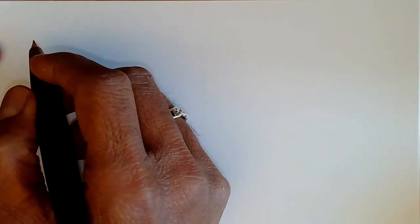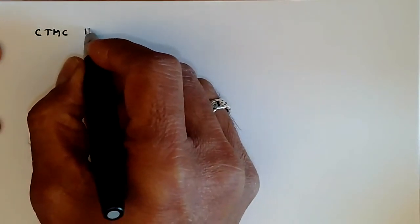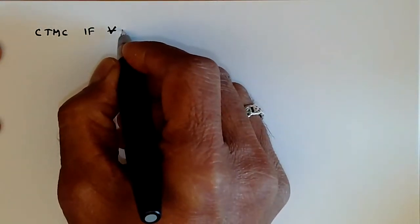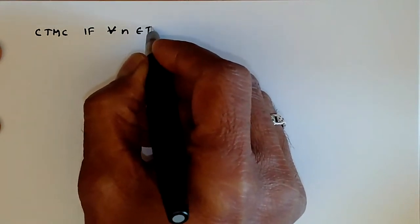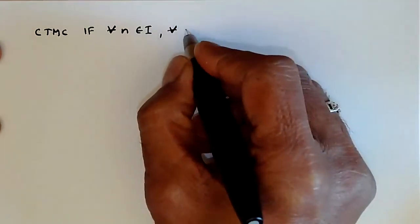We say that a stochastic process forms a continuous time Markov chain if, for all integers n belonging to I, and for all sequence of times T1, T2, et cetera,